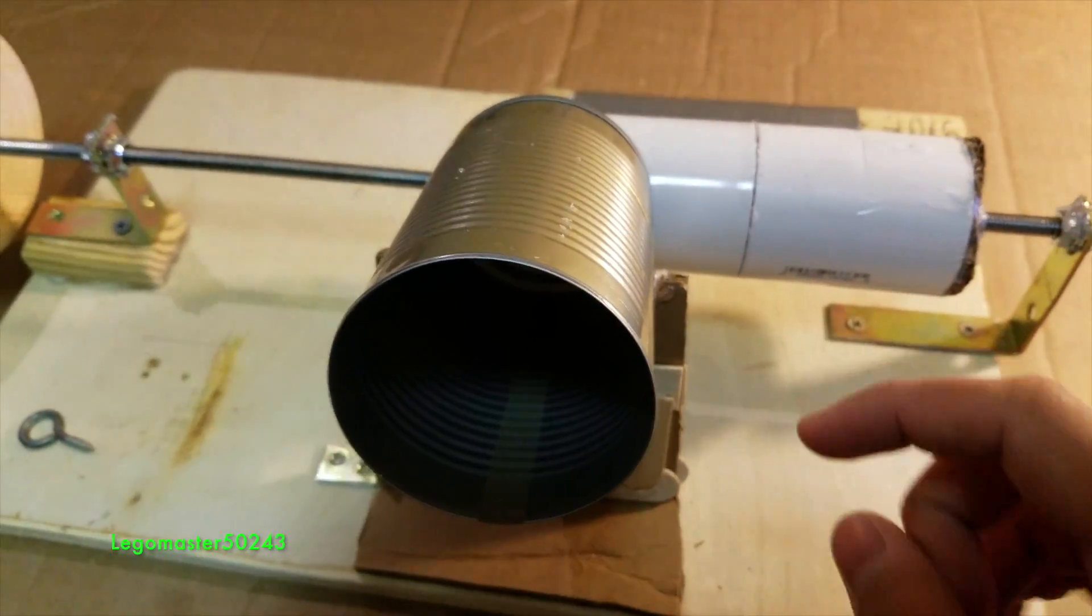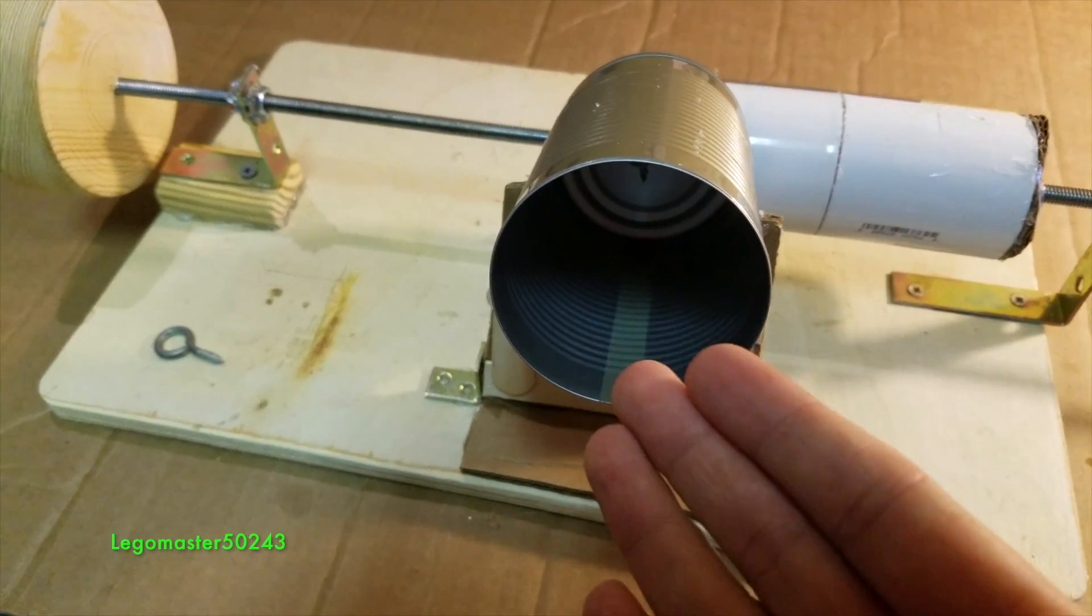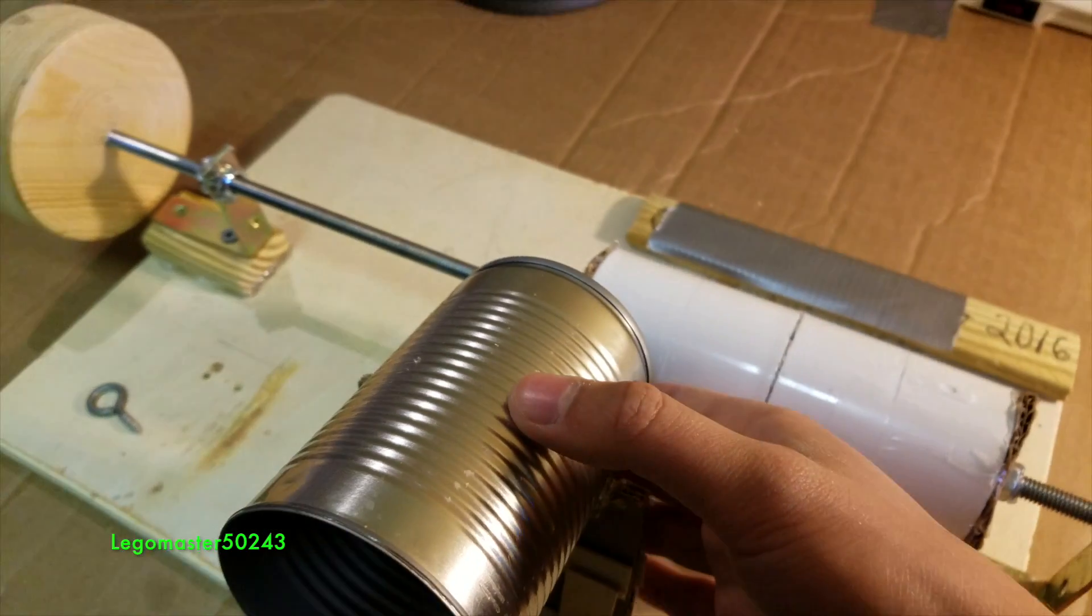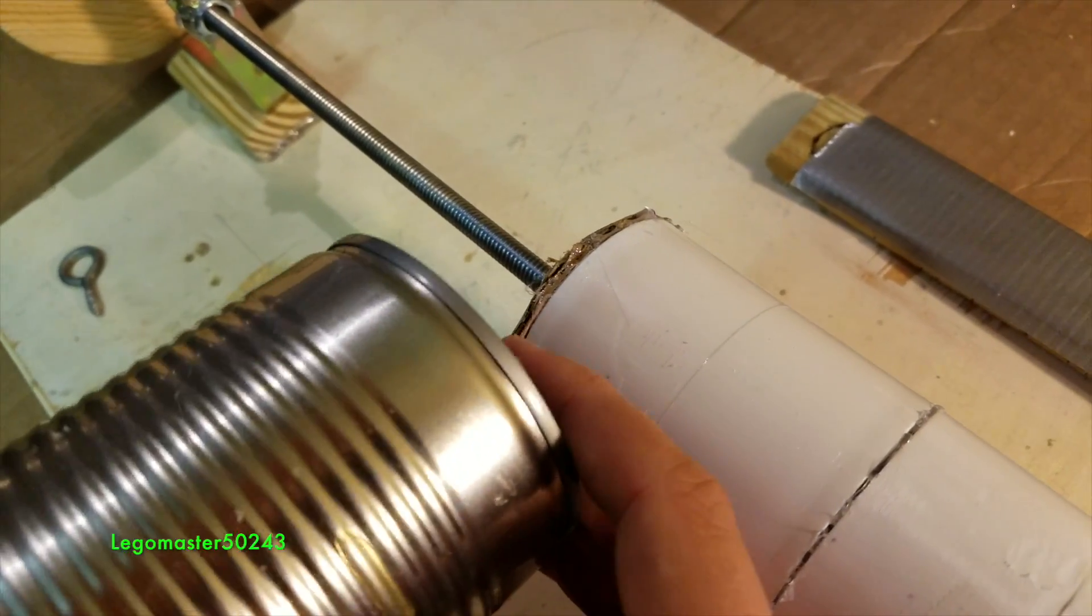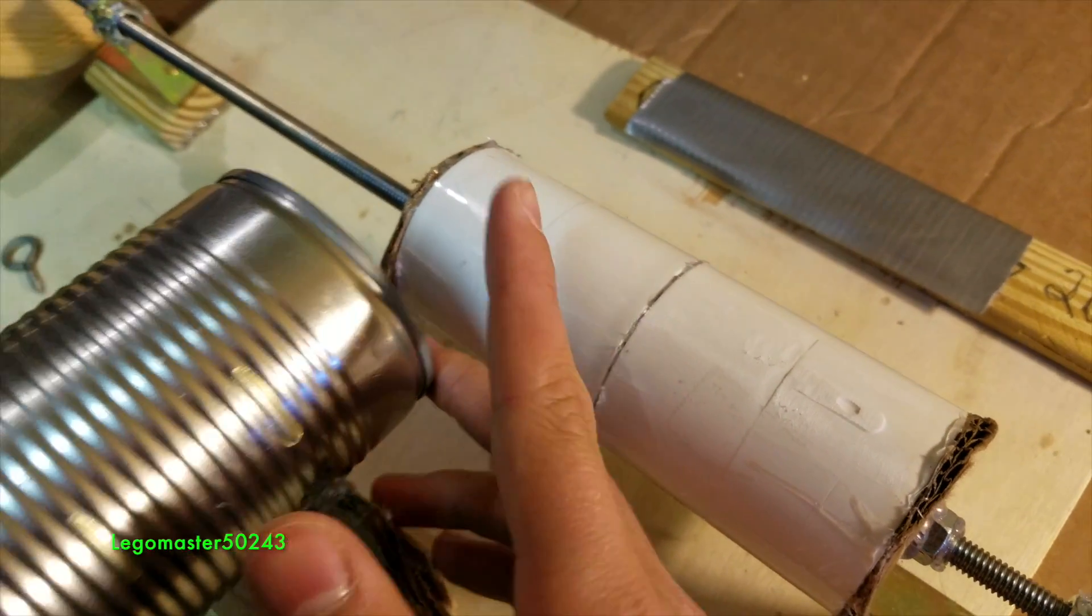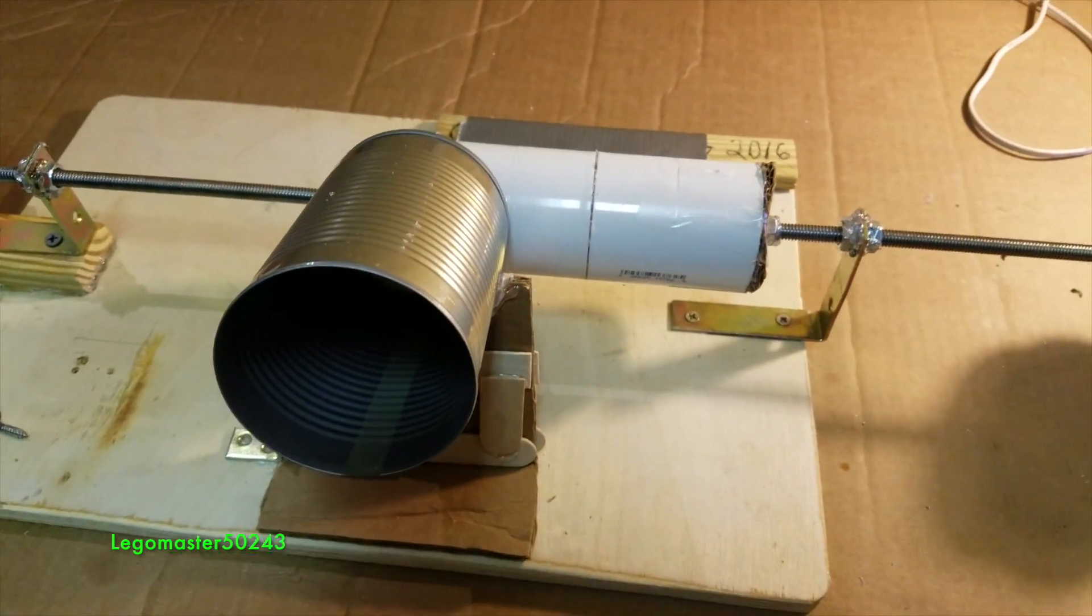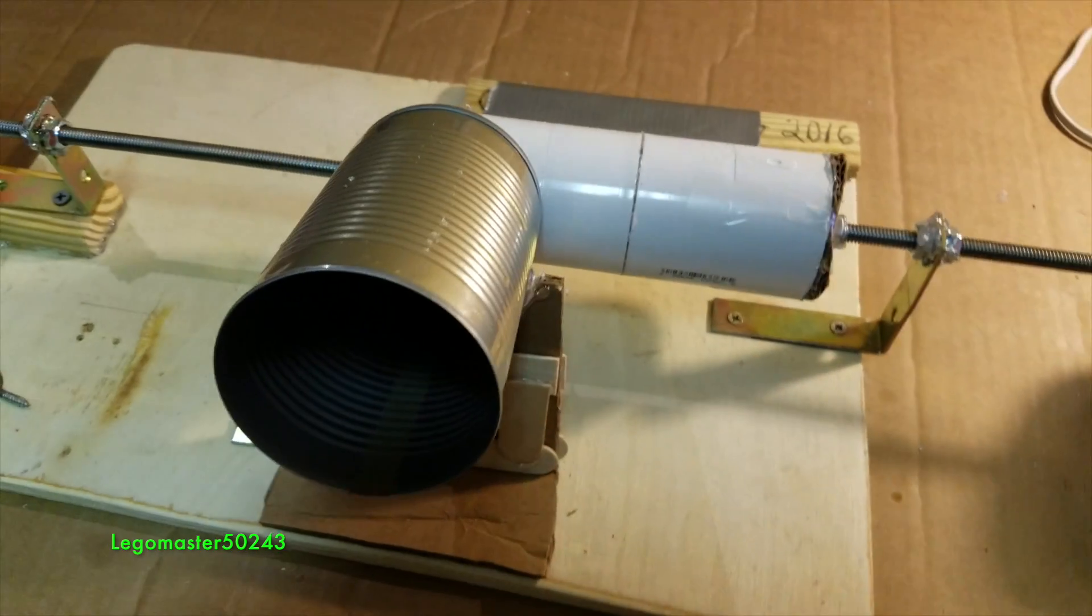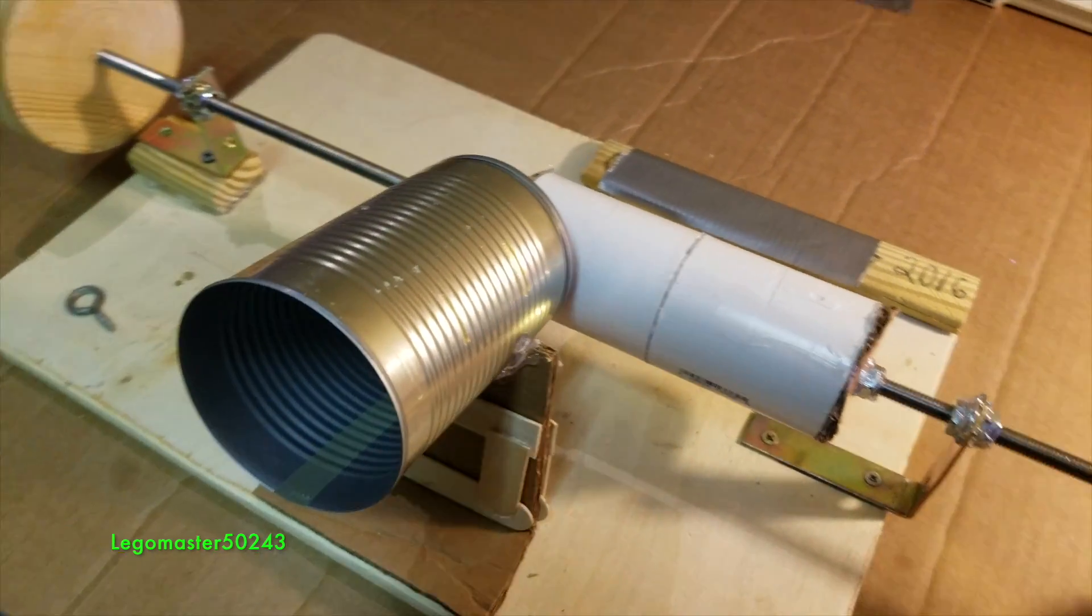And what this allows to do is when you're speaking into this, the vibrations from your vocal cords travel and hit the can, which will make the can start to vibrate, which will also send the vibrations to the needle. And then while you're recording over tinfoil or aluminum tape, the needle will inscribe vibrations of your voice onto the tinfoil, which then can be played back by rewinding and placing a needle on top of it and playing it again.